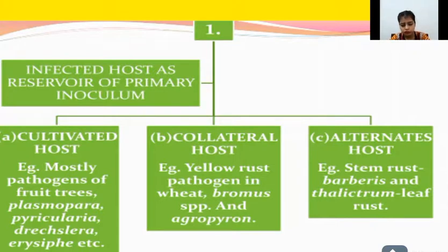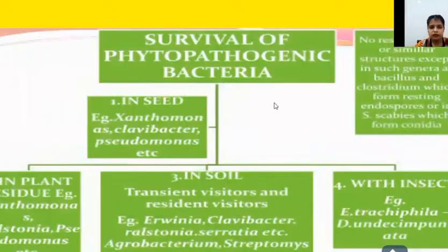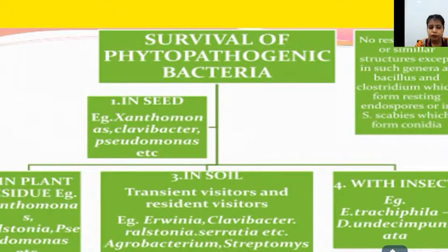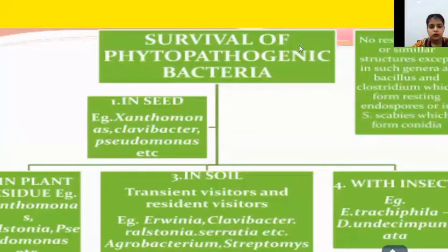Next is the survival of phytopathogenic bacteria. The word 'phyto' means plant, and pathogen means disease-causing agent. Bacteria can survive in seed, in plant residue, in soil, and they can also be transmitted through insects. Plant residue refers to the byproduct of any crop.